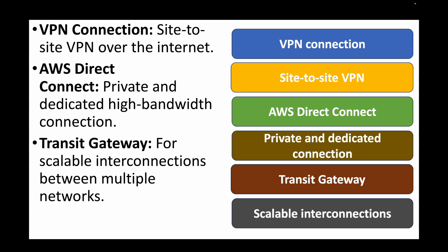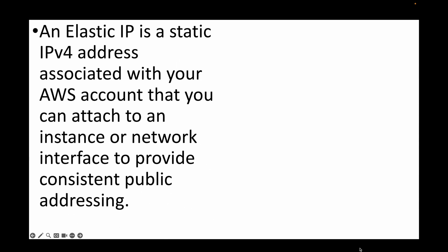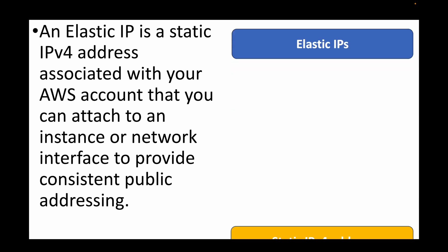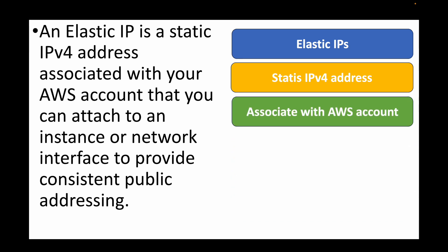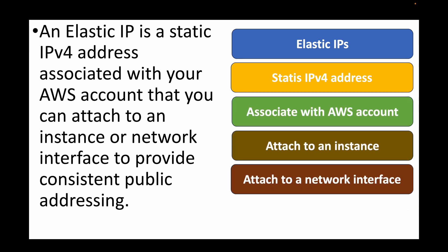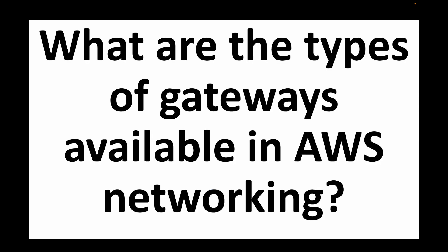The next question is: what is an Elastic IP (EIP) in AWS? An Elastic IP is a static IPv4 address that can be associated with your AWS account and attached to your EC2 instance or a network interface. These are ideal for use cases where you need consistent public IPs for your resources — for example, ensuring reliable DNS configurations where you want a static IP for your EC2 instance.